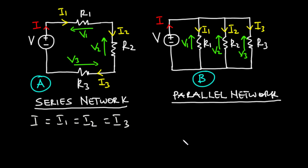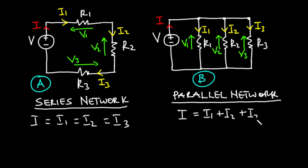On the other hand, circuit B is a parallel network because there are nodes between the resistors, and at each node the current is going to divide. In that case, the current flowing through R1, R2, and R3 are not the same and depends on the magnitudes of their resistance. Notice that in a parallel network, the total current supplied to the network is equal to the sum of the currents in the various branches, so that I, which is the total current, is equal to I1 plus I2 plus I3, where I1, I2, and I3 are the currents flowing through R1, R2, and R3 respectively.